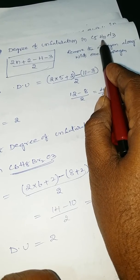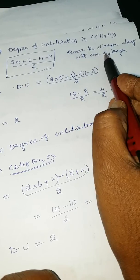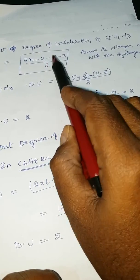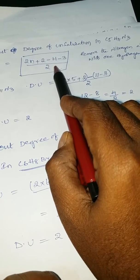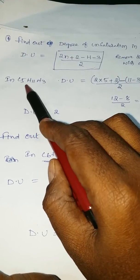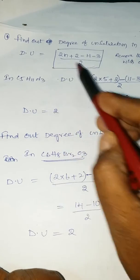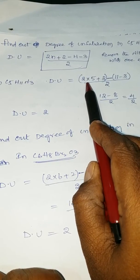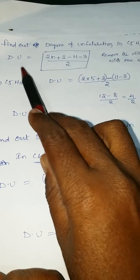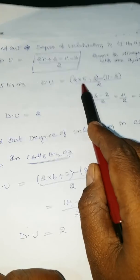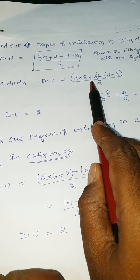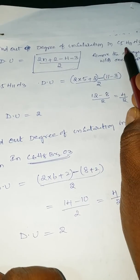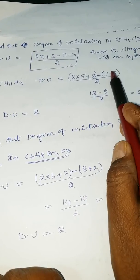Out of 11 hydrogens, remove 3 hydrogens. So the form is 2N plus 2 minus H minus 3, divided by 2. For C5H11N3, the degree of unsaturation equals 2 into 5 (number of carbons) plus 2, minus 11 minus 3.